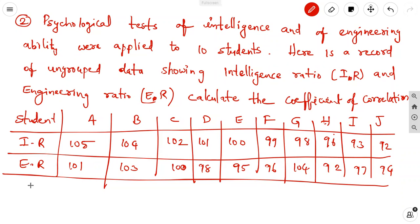Engineering ratio values are: 101, 103, 100, 98, 96, 104, 92, 97, 98. One value is missing here — 101 is there, making the full set: 101, 103, 100, 98, 95, 96, 104, 92, 97, 94.